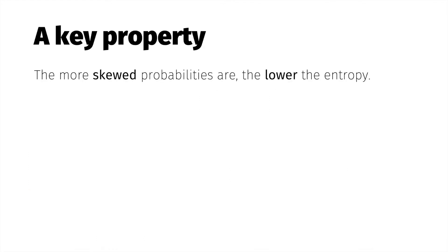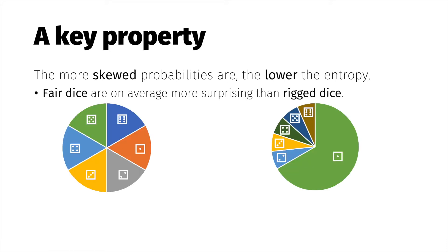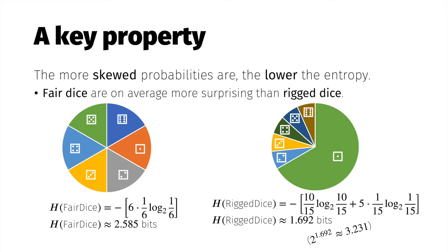Here's an important property of entropy: as the probabilities of outcomes become more skewed, entropy decreases. After all, predicting the outcome of a fair dice roll is more difficult than predicting a rigged dice roll. So if your rigged die rolls a 1 ten times more often than any other number, entropy lowers to 1.69 bits — that's equivalent to the choice between about three equally likely outcomes.